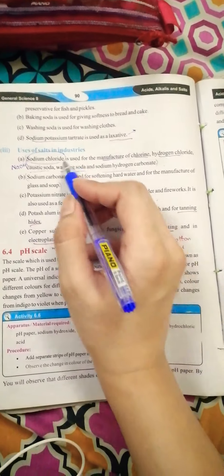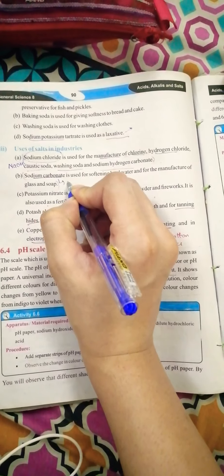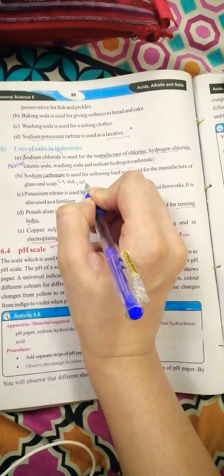Sodium carbonate is used for softening hard water and manufacture of glass and soap. Sodium carbonate is used for preparation of glass and soap.